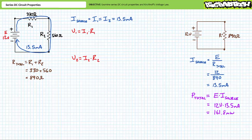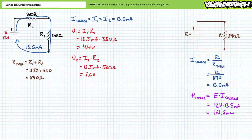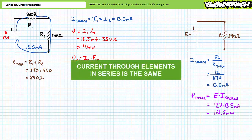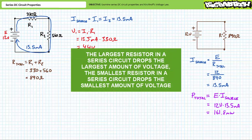I am willing to wager R1 at 330 ohms will drop comparatively less voltage than R2 at a larger 560 ohms. Substituting in our given values, the voltage drop across R1 will be roughly 4.4 volts, and the voltage drop across R2 will be roughly 7.6 volts. As predicted, the larger resistor in this series circuit drops more voltage and the smaller resistor less. So far we've observed: one, series resistors add up; two, current through elements in series is the same; three, the largest resistor drops the largest amount of voltage, and the smallest resistor drops the smallest amount of voltage.